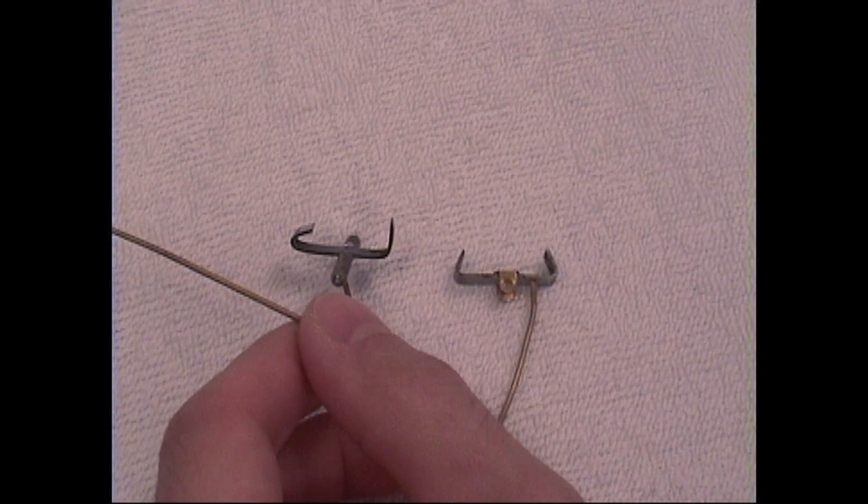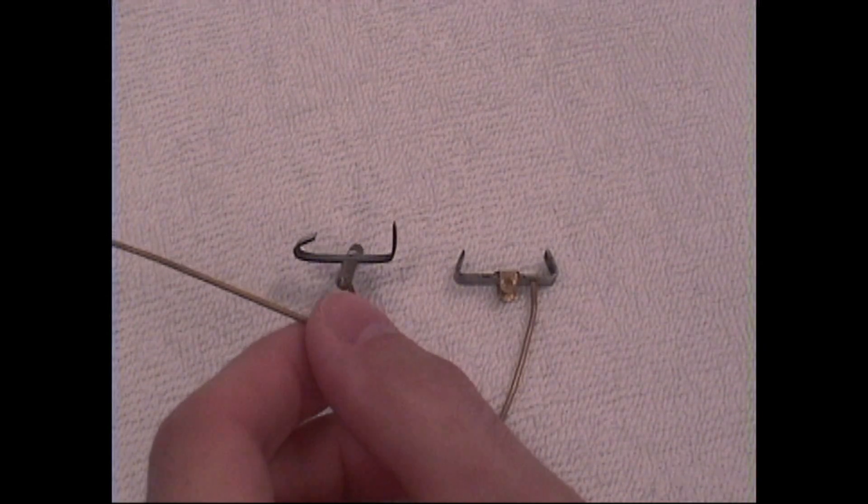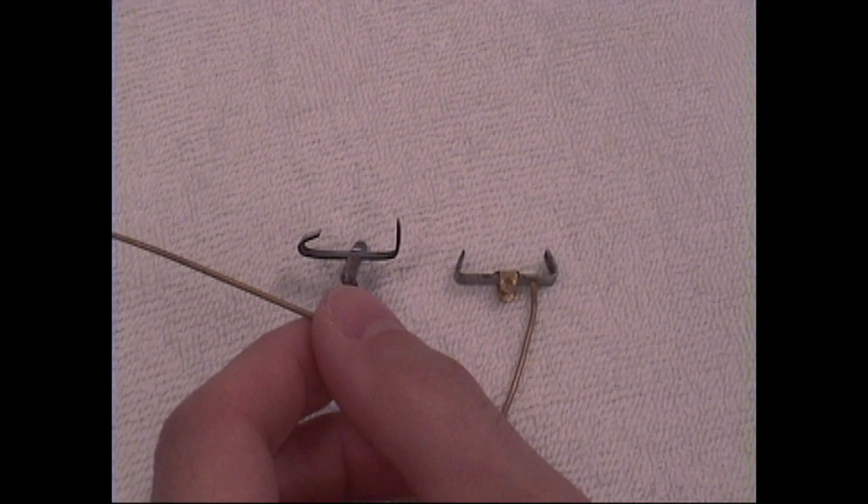So those are the two main important visual observations that you will make to determine what type of escapement that you have. Now there are many other escapements that were made. But these are the most popular and the most common ones that you will come across.